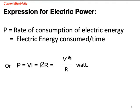So there are three expressions for power: VI, I²R, or V²/R. In SI units, if you express V in volts, R in ohms, I in ampere, then the power will be in watt.